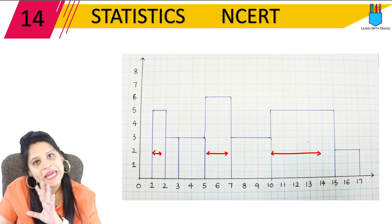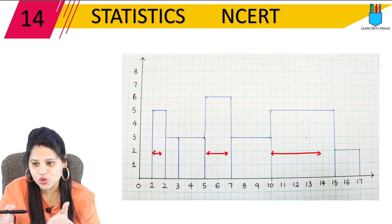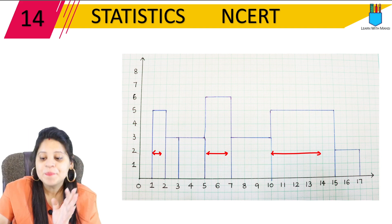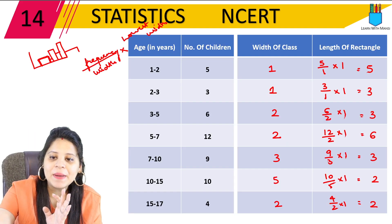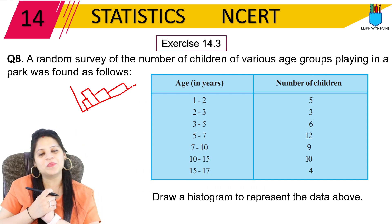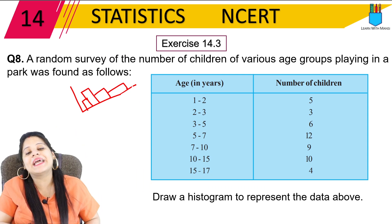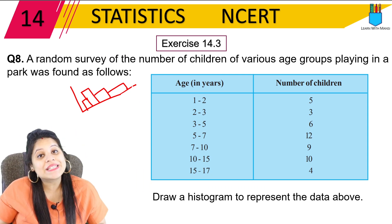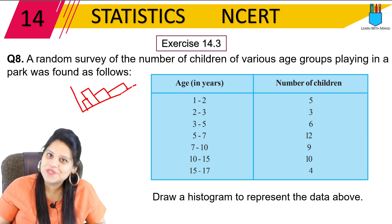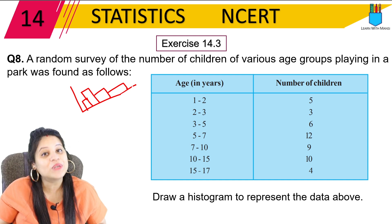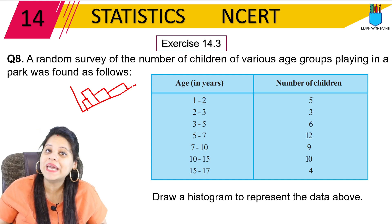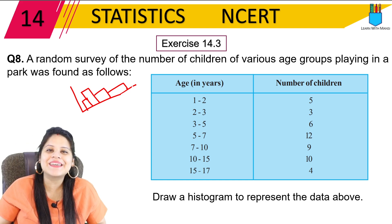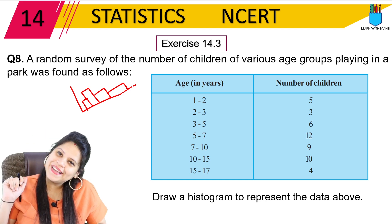I hope you understand how to make the histogram — first understand how to calculate the width and length, then plot it. The different bar widths are because the class intervals have different gaps. This was question number 8 of exercise 14.3. The next question is the last one, which will be in the next video found in the description. Take care and bye-bye.